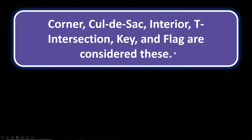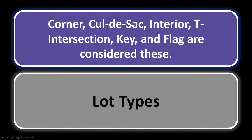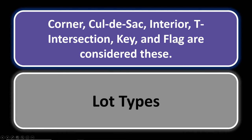Appraisal number two: corner, cul-de-sac, interior, T-intersection, key, and flag are considered what? When you hear these terms, you should automatically think of lot types. A corner lot, a cul-de-sac court, an interior lot on a street surrounded by neighbors, a T-intersection where your house faces the end of another street, and key and flag lots — these all refer to lot types.